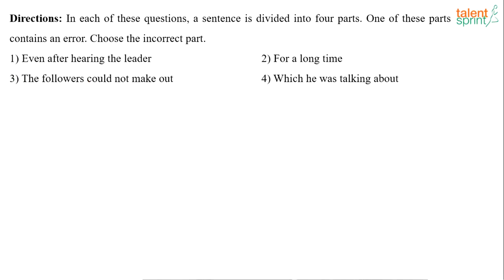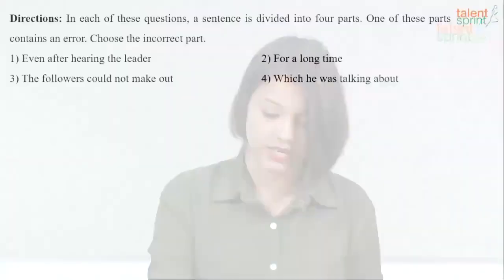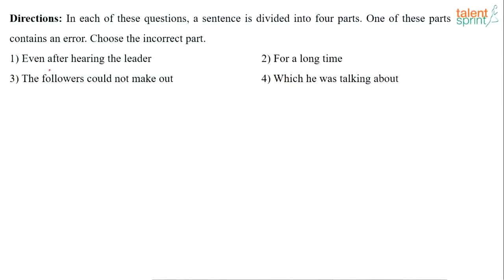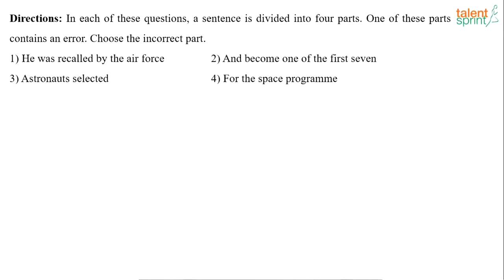Even after hearing the leader for a long time, the followers could not make out which he was talking about. I think this one is very simple — anyone can recognize the error. It should be 'what he was talking about,' not 'which he was talking about.' So the error is in the fourth part.